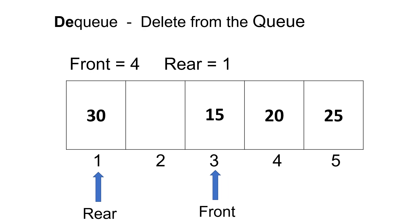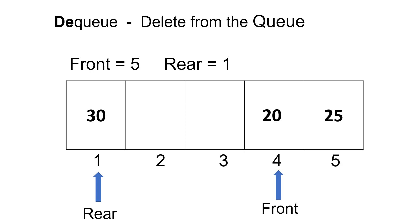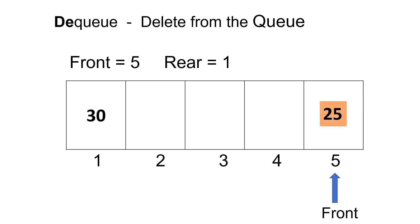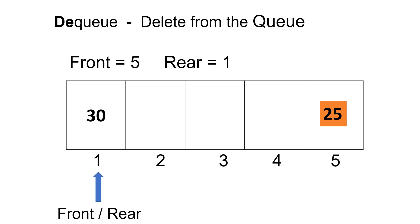If we apply three dequeue operations continuously, then first, number 15 will get deleted from the queue and front will point to index 4. Then number 20 will get deleted from the queue by incrementing front by 1, which will point to index 5. After deleting the third element, front will point back to index 1 because it was pointing to the last index. As we can see, there is only one element present in the queue as front and rear both are pointing to the same index.